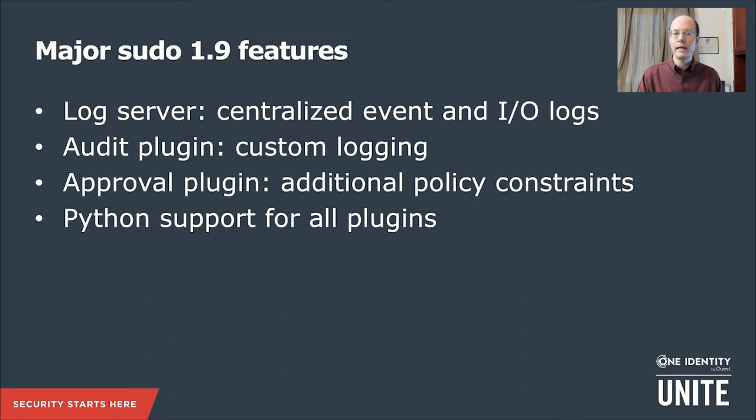Now, onto the new stuff in 1.9. The major features here are a log server, which supports centralized event and IO logging, a new audit plugin type which can support custom logging, an approval plugin type which can add additional policy constraints on top of the existing policy plugin, and Python support for all the plugin types — both the old ones and the new.